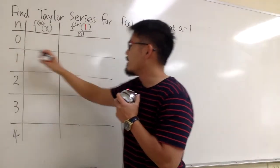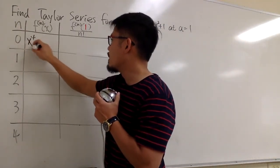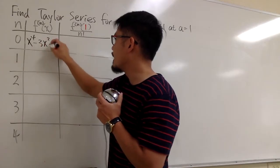For the zero derivative, it is just the function itself. So we'll just put this down right here: x to the fourth power minus 3x squared plus 1.